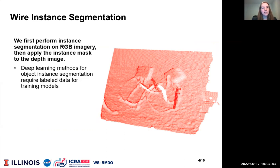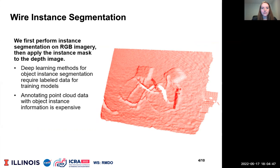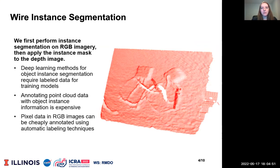Object instance segmentation models require label data for training. Annotating point cloud data with object instance information is expensive. Pixel data in RGB images can be cheaply obtained using automatic labeling techniques. In general, point data and depth imagery are more difficult to label to obtain ground truth information than pixel data in RGB imagery.